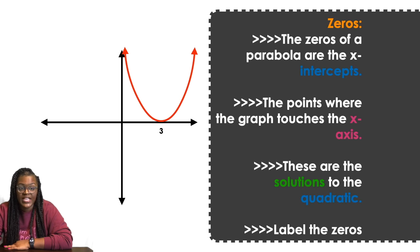These are also called solutions. You can also call these solutions of quadratics. All of these words mean the same thing: zeros, x-intercepts, solutions. They're just asking to find out where does this graph touch the x-axis.